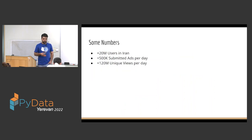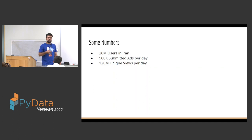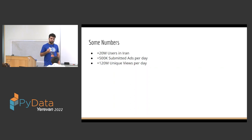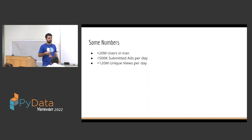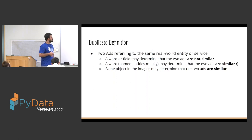Let's talk about some numbers from DIVAR. Right now we have 20 million active users in Iran. It's the most used classified ad service in Iran. There are about half a million submitted ads each day and 120 million unique views per day. We have a team of about 500 operations people looking for fraud ads, spam ads, and duplicate ads — but we cannot control it using operations alone, so we're trying to do some parts with machine learning.